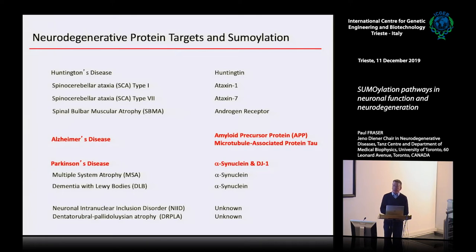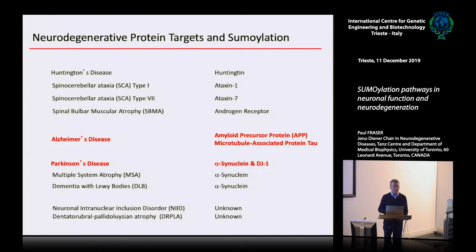There have been prior models, particularly in Drosophila, showing that SUMOylation of Huntingtin exacerbated the disease phenotype. Our primary goals as an institute are Alzheimer's, Parkinson's, prion diseases, and ALS. My focus is largely on AD and PD.